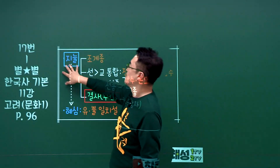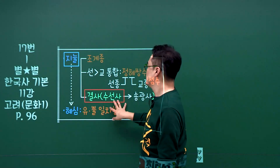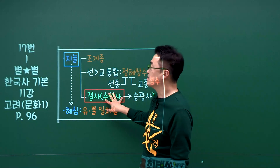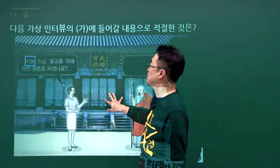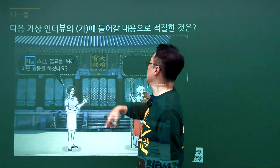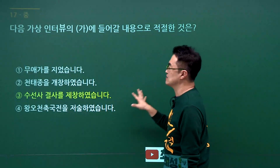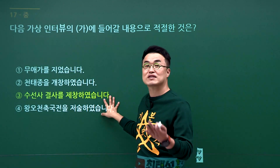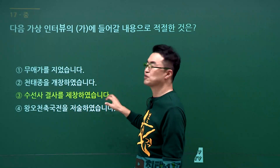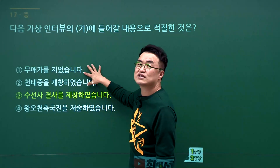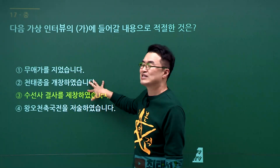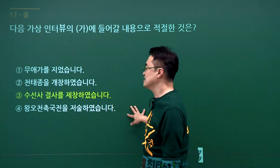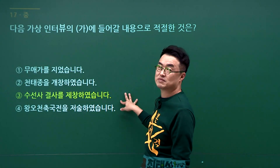고려 승려 지눌 문제입니다. 지눌 스님은 수선사 결사를 제창했습니다. 문제에서 지눌 스님이 무엇을 하셨냐는 물음에 수선사 결사를 제창하였다는 3번이 정답입니다. 무애가는 원효, 천태종은 의천, 왕오천축국전은 혜초입니다. 정답은 3번입니다.